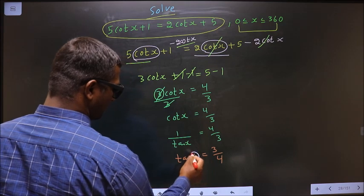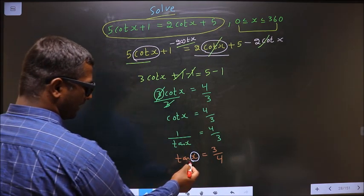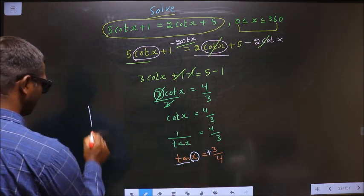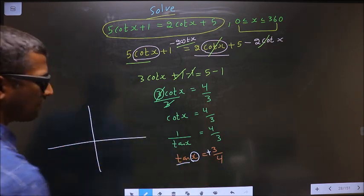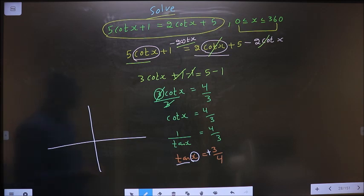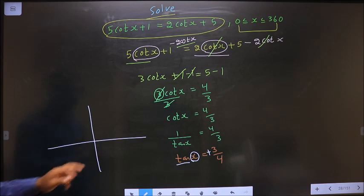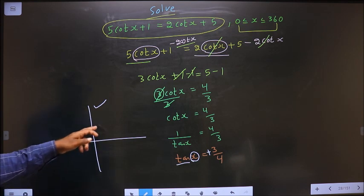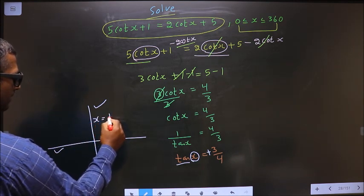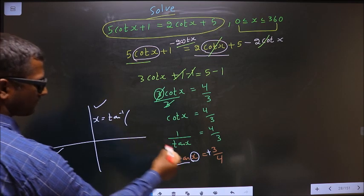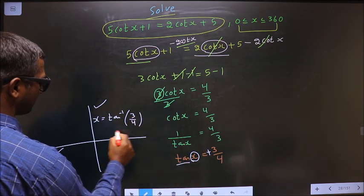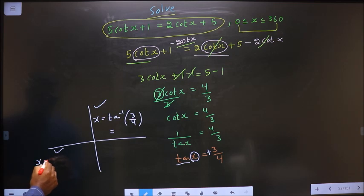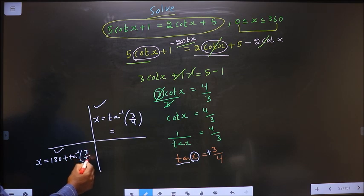So now to get the values for x, here I have tan and here it is positive. So now I should check in what all quadrants is tan positive. It is all silver tea cups. So tan is positive in the first and in the third. To get an angle in the first, we do directly tan inverse 3 by 4. To get an angle in the third, we should do 180 plus tan inverse 3 by 4.